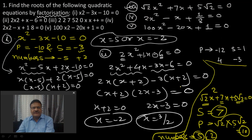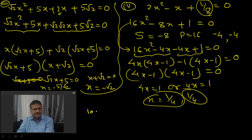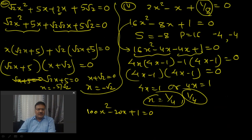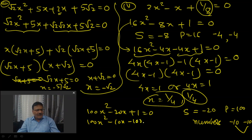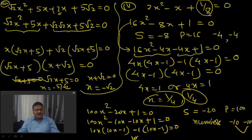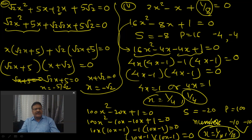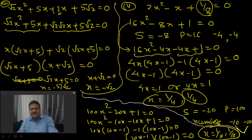Fifth question: 100x² − 20x + 1 = 0. Sum needed = −20, product = 100. Numbers are −10 and −10. Split: 100x² − 10x − 10x + 1 = 0. Take 10x common: 10x(10x − 1) − 1(10x − 1) = 0, so (10x − 1)² = 0. Therefore x = 1/10, 1/10 — again repeated roots. This is the case of repeated roots, just like the previous question where both roots were 1/4.